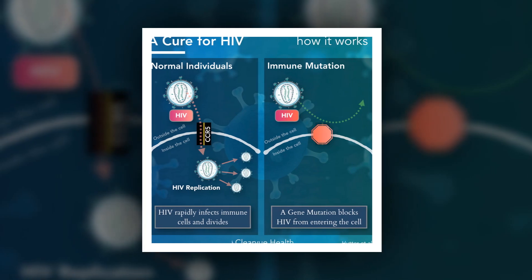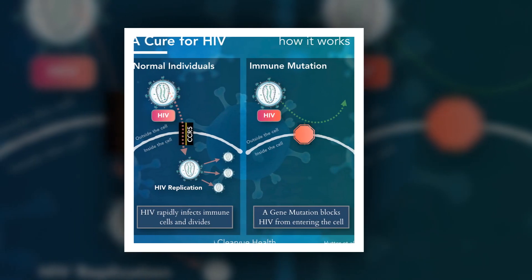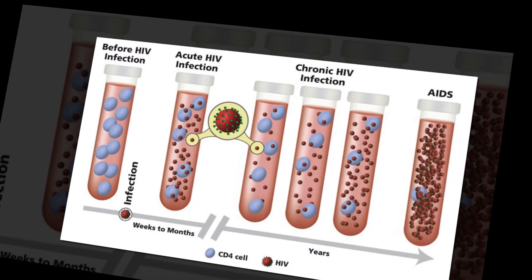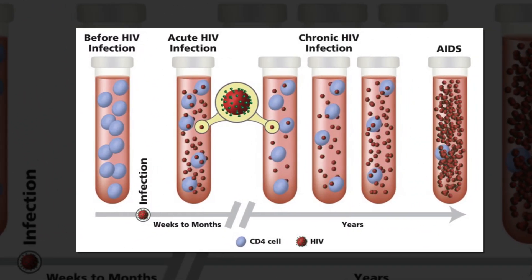Measurements showed that VNPs had lower zonulin levels, a marker indicating gut mucosal disruption, implying better gut integrity than progressors.